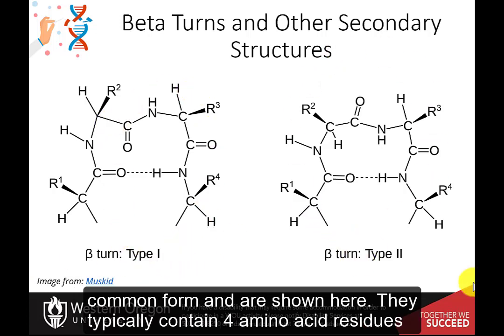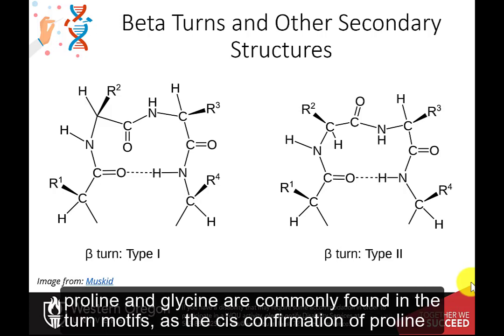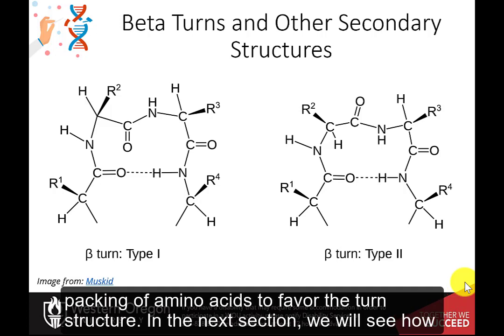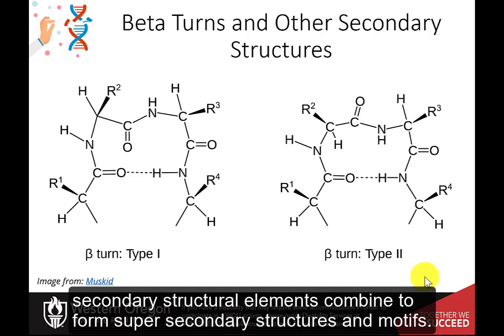They typically contain four amino acid residues. Proline and glycine are commonly found in the turn motifs, as the cis conformation of proline favors sharper conformational bends, while the minimal glycine sidechain allows for tighter packing of amino acids to favor the turn structure. In the next section, we will see how secondary structural elements combine to form super-secondary structures and motifs.